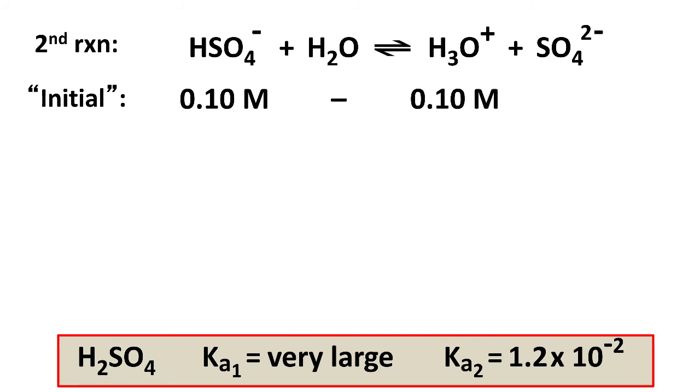H3O plus is 0.1 molar, because that's how much we got from the first dissociation. And again, usual stuff, we'll pretend the second dissociation hasn't happened. So our quote unquote initial is the start of the second dissociation is the same as the end of the first.